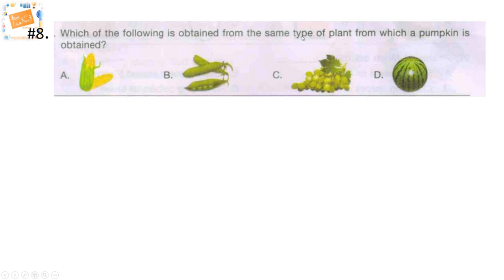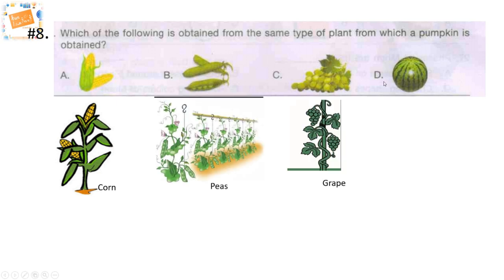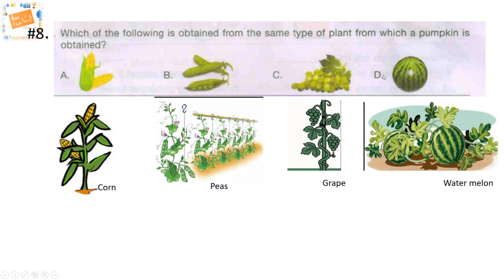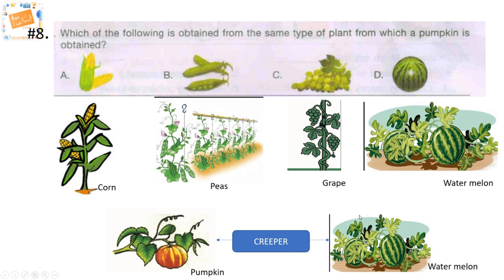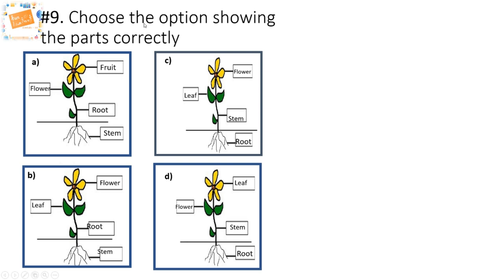Question 8: which of the following is obtained from the same type of plant from which a pumpkin is obtained? Options are A — corn, B — peas, C — grape, or D — watermelon. Read the question carefully — we need to find what type of plant a pumpkin is, then match it. Pumpkin is a creeper. Corn is a shrub; peas and grape are climbers as they need support; watermelon grows on the floor — it's a creeper, just like pumpkin. So the answer is option D — watermelon.